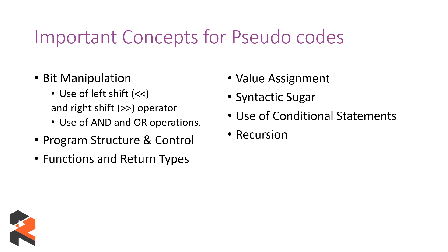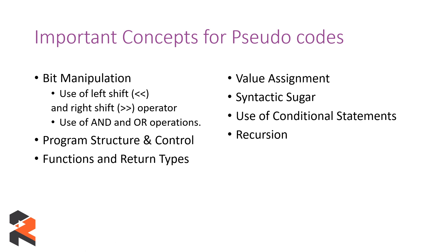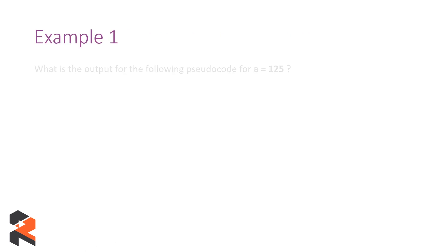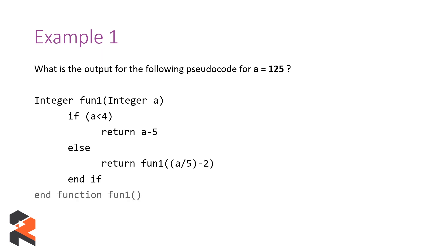We are not going to go through these concepts theoretically — we are going to look at examples and touch on these points while looking at the examples directly. The first example is: what is the output for the following pseudocode for a equals 125? You are given a pseudocode which will have some things that might confuse you if you are looking at it for the first time.